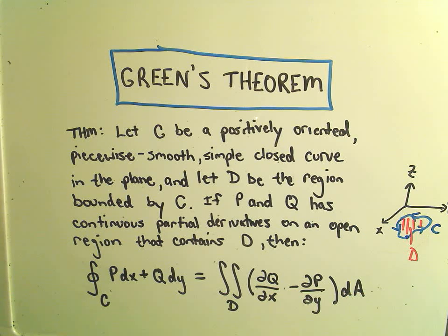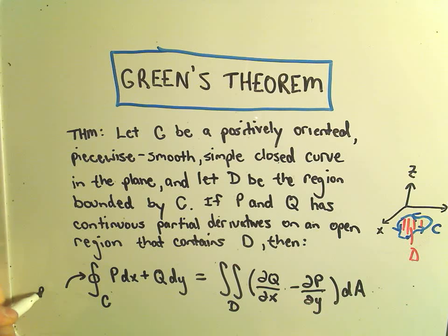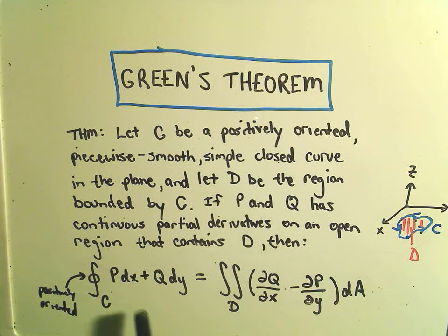if we integrate this line integral, this notation with a little circle on the integral means that the curve is positively oriented, because we could travel the other direction and then something different happens. It says what you can do is you can turn this line integral into a double integral, just a normal double integral that involves the partial of q with respect to x minus the partial of p with respect to y.